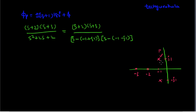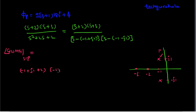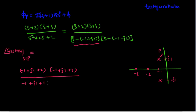To calculate the angle of departure for P, we evaluate G(s)H(s) at s equals P (which is minus 1 plus j1), excluding the term corresponding to P itself. Substituting s equals minus 1 plus j1, the numerator terms become (minus 1 plus j1 plus 2) times (minus 1 plus j1 plus 3), and the denominator uses only the other pole term (minus 1 plus j1 minus (minus 1 minus j1)) which is 2j. This gives us (1 plus j1)(2 plus j1) divided by 2j.